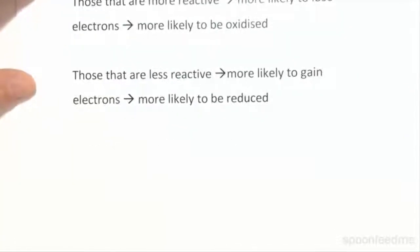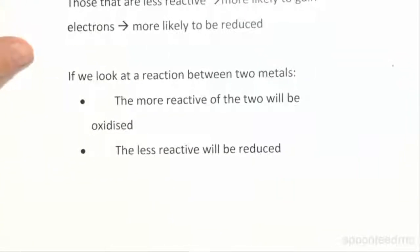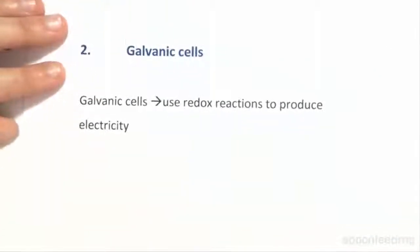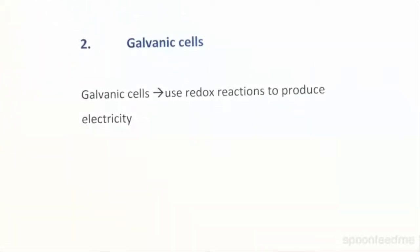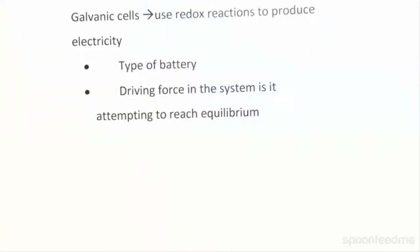This concept is really important when we start to talk about galvanic cells. If we look at any reaction between two metals, the more reactive of the two will be oxidized and thus the less reactive will be reduced. Galvanic cells actually use these redox reactions in order to produce electricity. They are a type of battery, and the driving force of the system is actually its attempt to reach equilibrium.